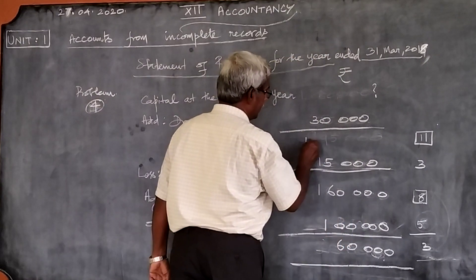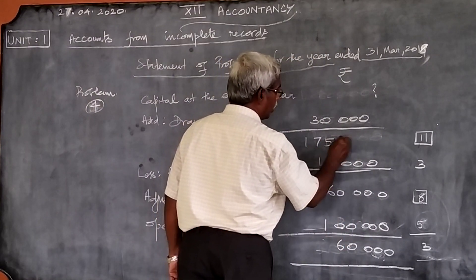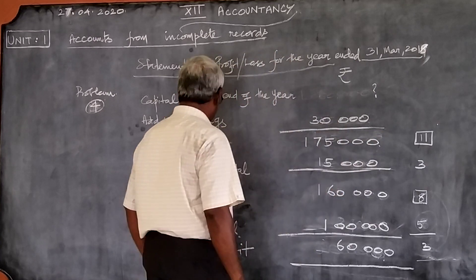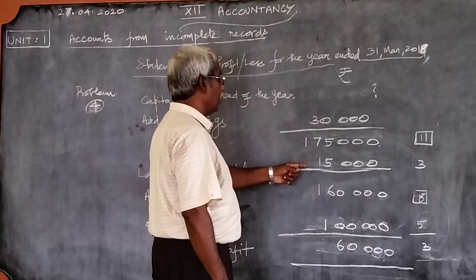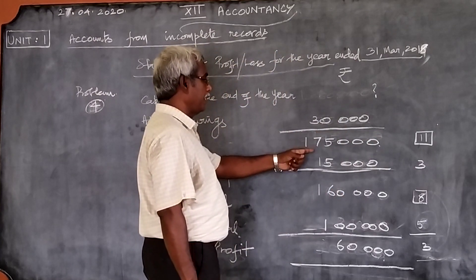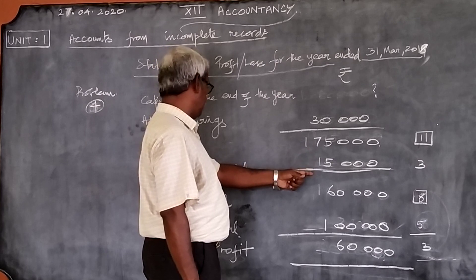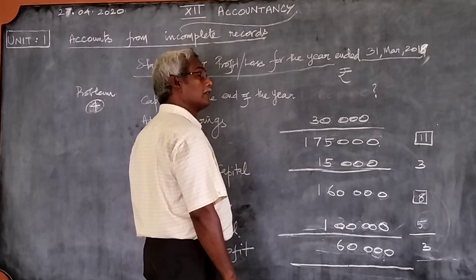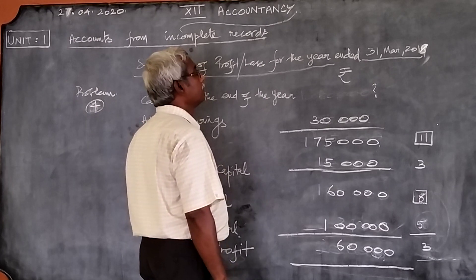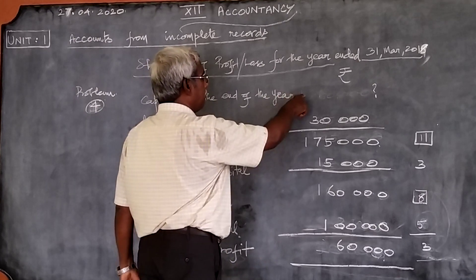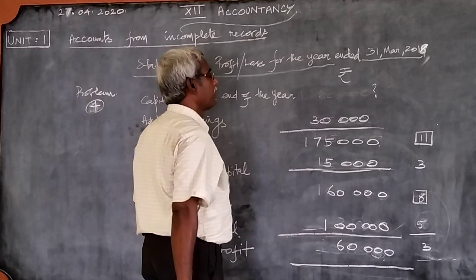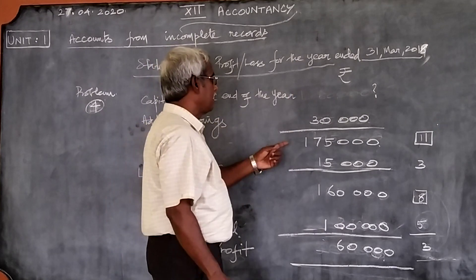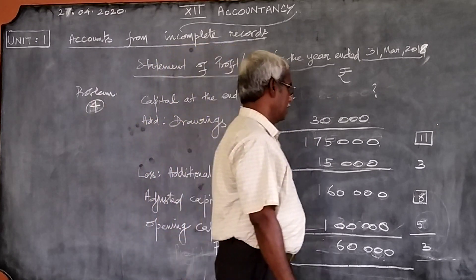That was 1,75,000. If there is 1,75,000, then 1,75,000 minus 15,000 will give 1,60,000. Again, there should be some number. With that number, we should add 30,000 to get 1,75,000.